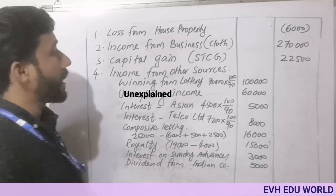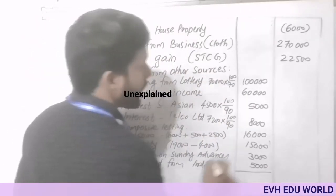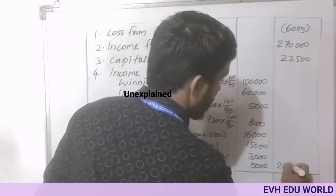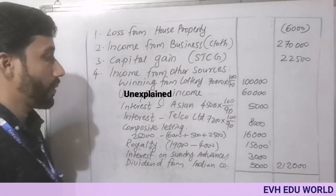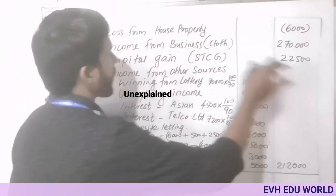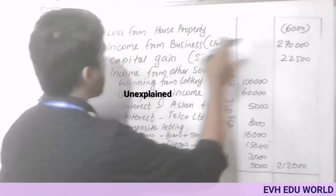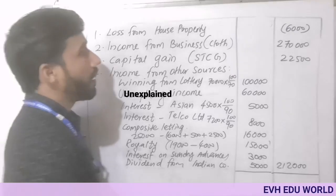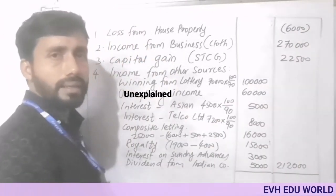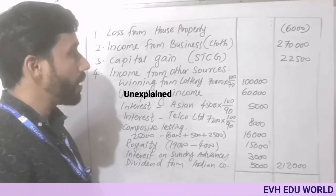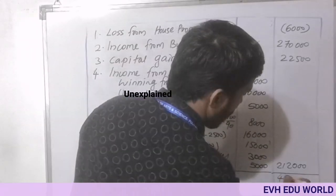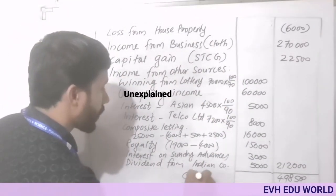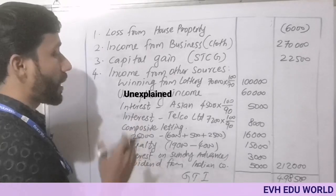Total income from other sources is computed by adding: lottery 1,00,000; unexplained income 60,000; interest items 5,000 and 8,000; composite letting 16,000; royalty 15,000; sundry interest 3,000; dividend 5,000 — totalling 2,12,000. Business income is 2,70,000. Capital gain (short-term) is 22,500. Loss from house property 6,000 is deducted. Gross total income works out to 4,98,500.